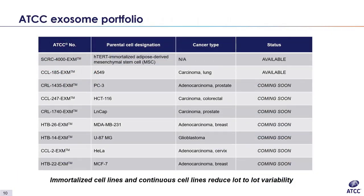This slide shows the ATCC exosome portfolio. ATCC is currently working on one hTERT-immortalized mesenchymal stem cell line and eight continuous cancer cell lines representing different cancer types. We decided to use hTERT MSCs instead of primary MSCs because primary MSCs have donor-to-donor variability and a limited lifespan. hTERT MSCs are from a single source and are continuous, which reduces lot-to-lot variability. Similarly, continuous cancer cell lines also reduce lot-to-lot variability of the exosome cargo content, making exosomes from these cells a good reference material.